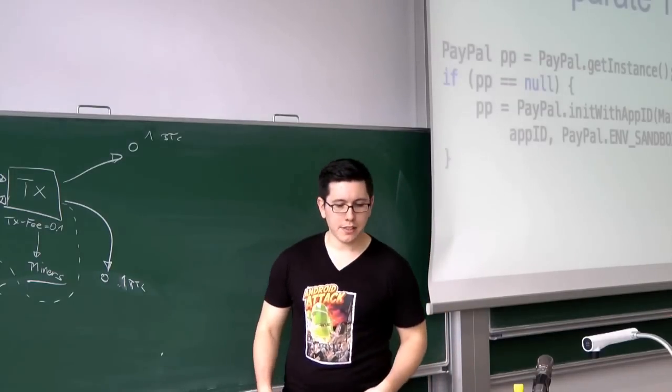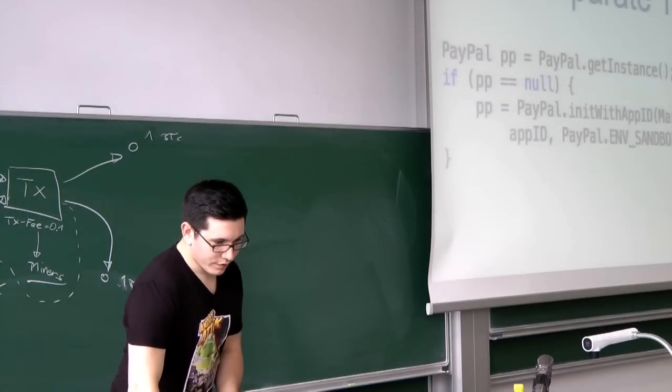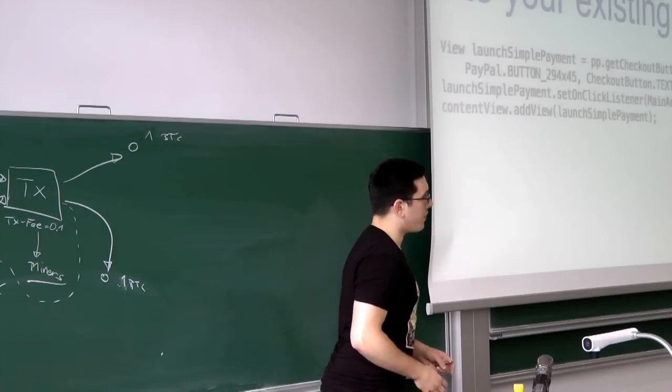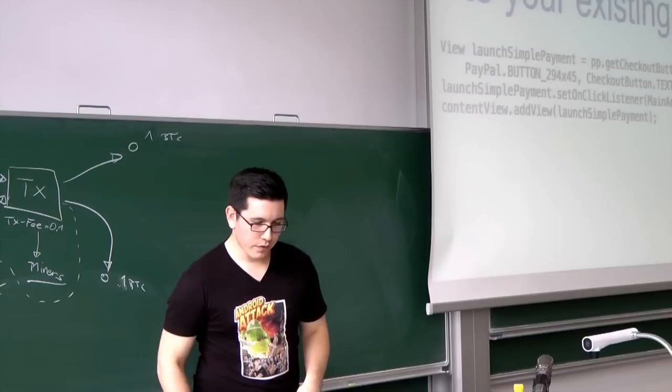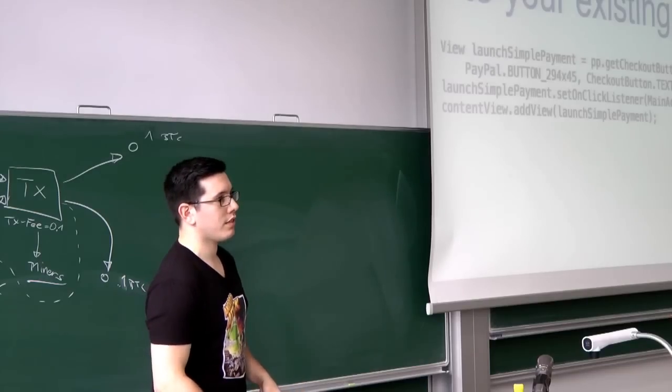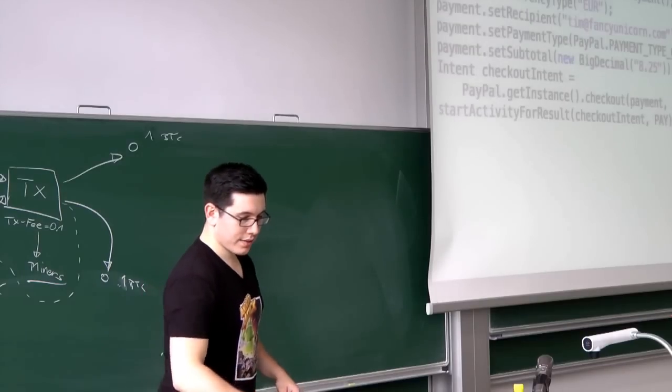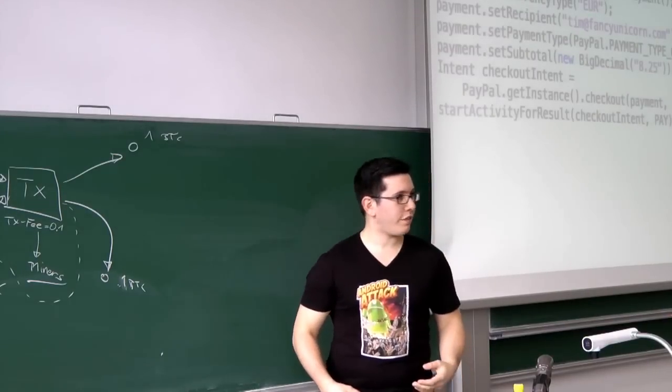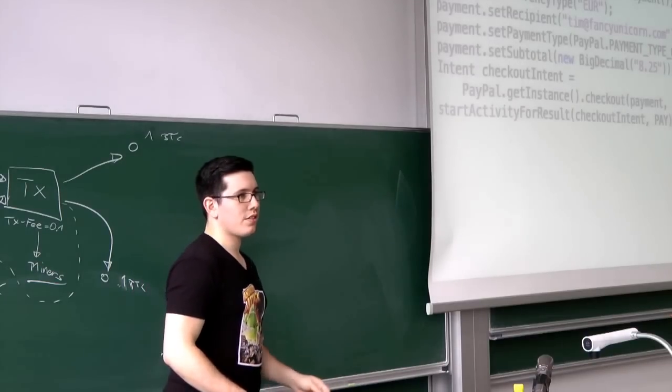And then you are going to initialize the payment. So, you need some kind of PayPal object. You can use this from the library. You have to initialize it with your app ID. And you can choose different environments. There is the live environment, a sandbox, and a demo mode, which basically accepts everything you enter. Then you are going to add a PayPal button to your existing layout, which is being computed. So, you can provide a text like donate, pay, whatever you want. And you can choose between different sizes. Then you have to add an on-click listener. So, basically, if you use a tip service button, something has to happen. And you add it to your view. And this thing is the magic stuff. So, you initialize the payment. You set a currency. Who is going to receive this payment? And how much do you want to pay? Then you just start this intent. And that's it.